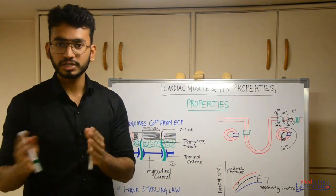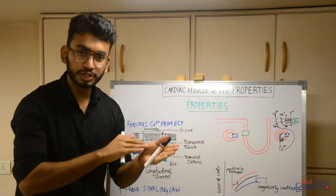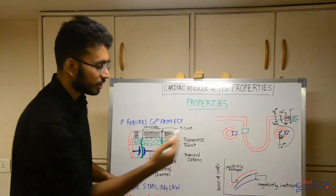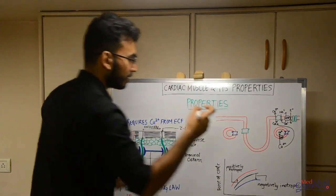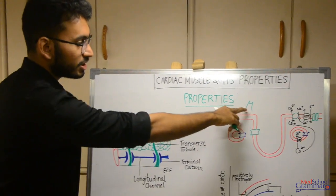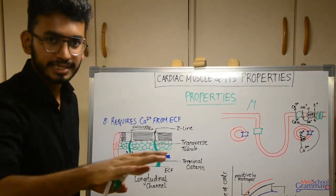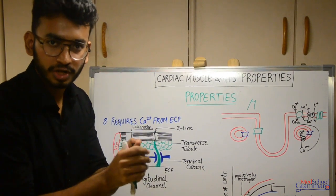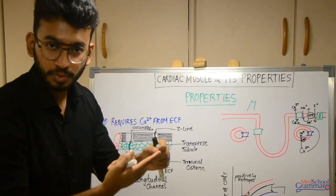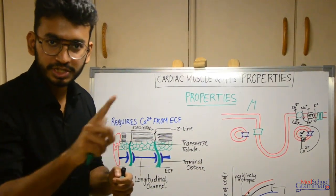Excitation-contraction coupling means that the tissue is excited — the cardiac muscle is excited, there is an action potential coming. The action potential spreads and leads to the mechanical event of contraction. This entire process in which excitation, or the action potential of the cardiac muscle, leads to its contraction is known as excitation-contraction coupling.